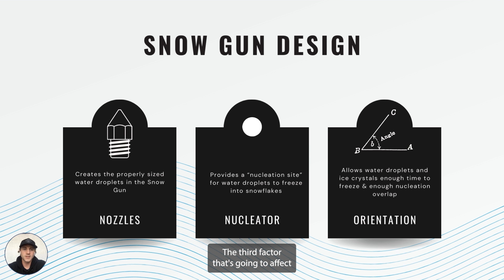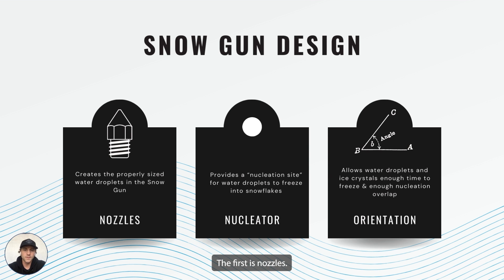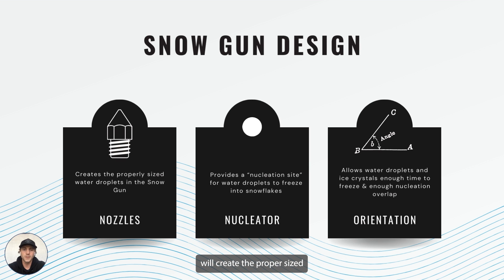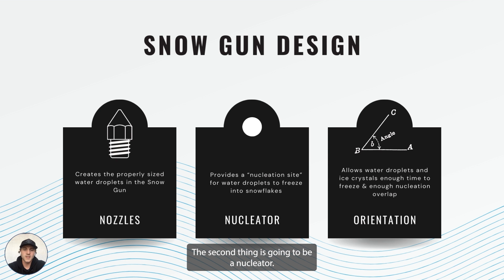The third factor that's going to affect snow output is snow gun design. Within the snow gun design, we have a few things that can affect snow output. The first is nozzles. Having the proper nozzles fastened in the snow gun will create the proper size water droplets for snowflakes to form. If improper nozzles are used, the water droplets will either be too small or too large, which can affect snow output.